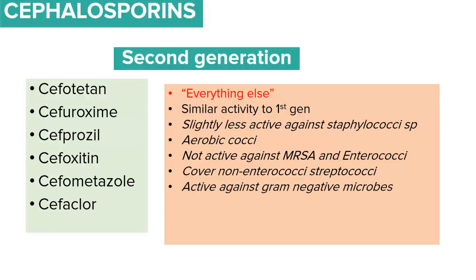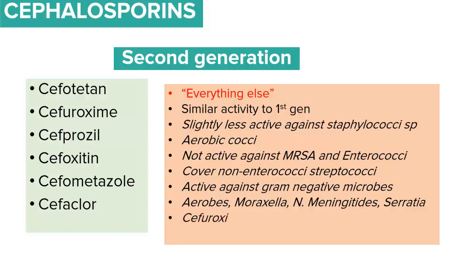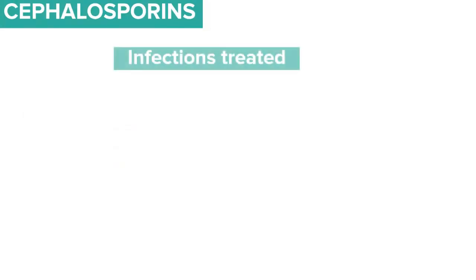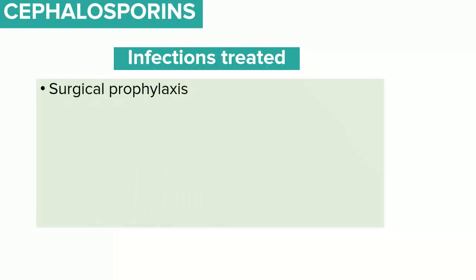The second-generation cephalosporins are more active against gram-negative microbes than the first generation. Their activity is pronounced against Aerobes, Moraxella catarrhalis, Neisseria meningitidis, and Serratia species. Cefuroxime has activity against Haemophilus influenzae, unlike other second-generation examples. Cefoxitin and cefotetan are known to cover oral anaerobes.